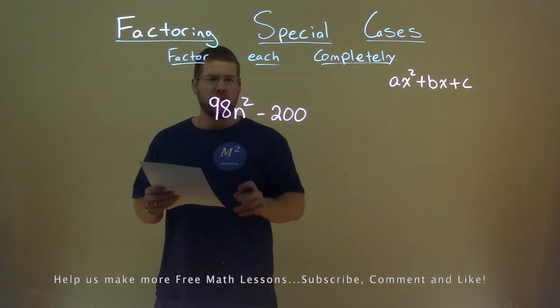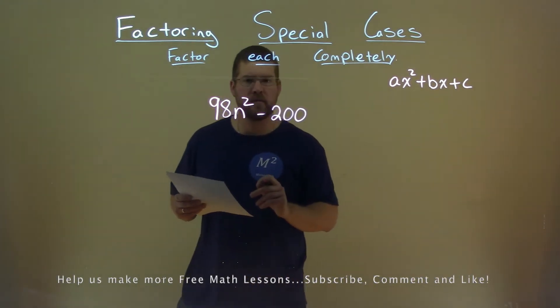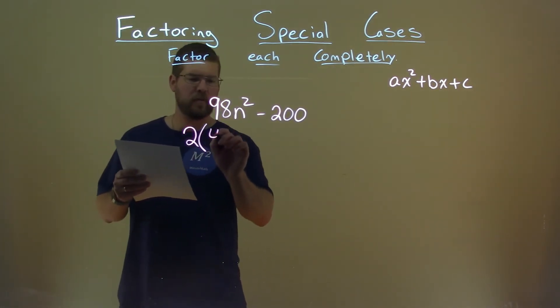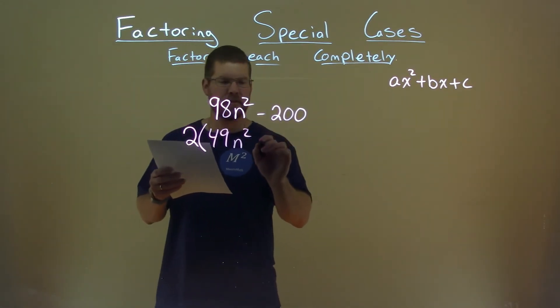First thing I'm noticing is these are kind of large numbers, and 2 goes into both of these evenly. So I'm going to pull 2 out. 98 divided by 2 is 49, and we have N squared here, and 200 divided by 2 is 100.